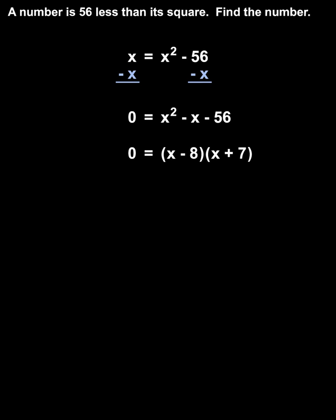So we have 0 equals x minus 8 times x plus 7, which means that either 0 equals x minus 8 or 0 equals x plus 7.